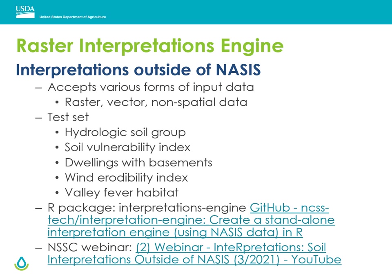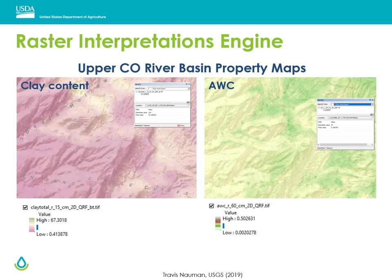The goal of the interpretations engine is to run interpretations outside of NASIS and with a variety of input data. While we are focused on raster data inputs, the engine was designed to be flexible for other types of data. The target set of interpretations were selected based on most popular in Web Soil Survey and a diversity in the type of interpretation. The results can be found in an R package available on GitHub and were presented in a recent National Soil Survey Center webinar. We are focused on testing continuous property maps as raster data inputs, with the intention of facilitating use of the anticipated nationwide soil property maps and making them relevant for conservation activities and land managers.